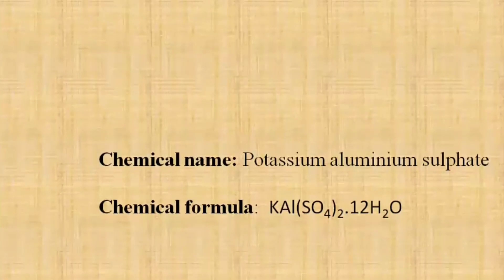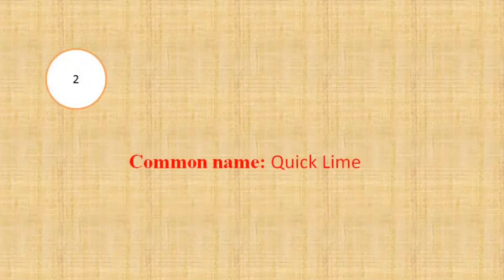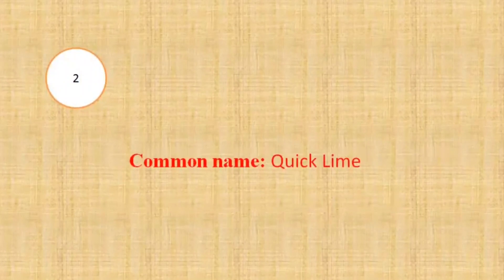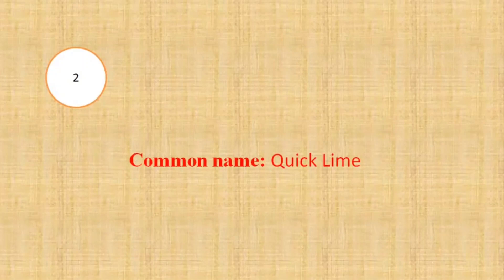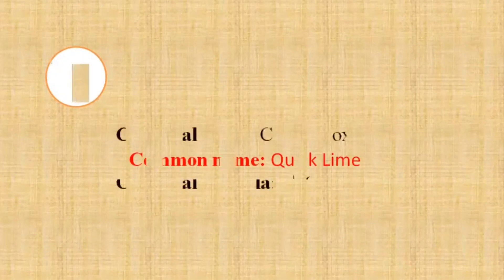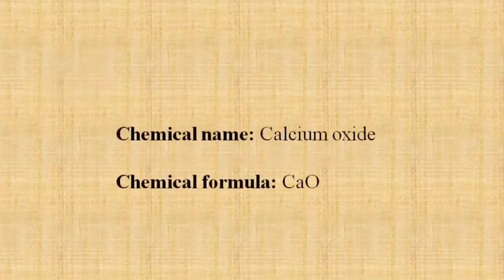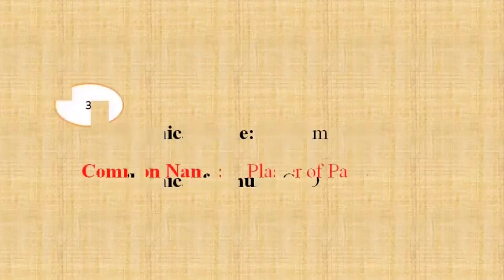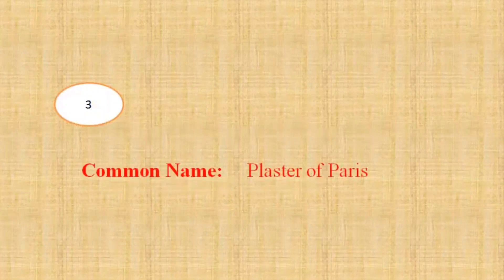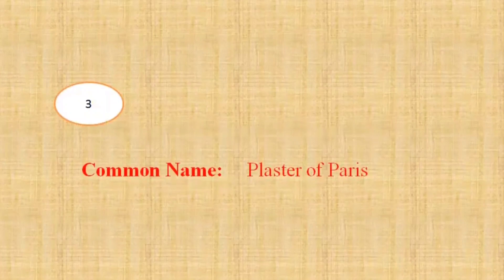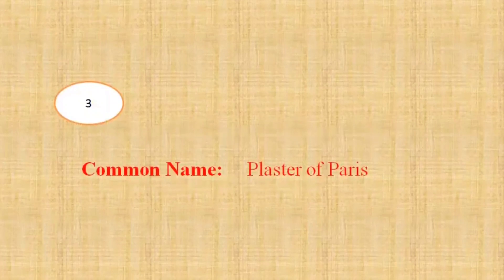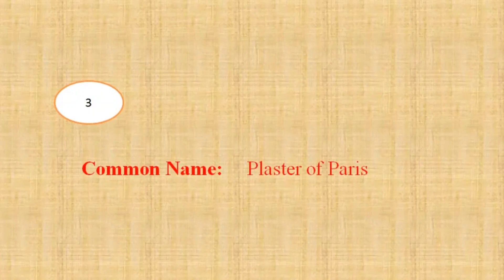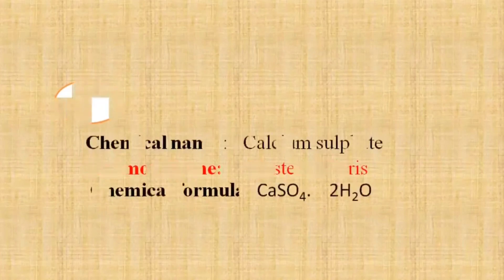Our next question is what is the chemical name of quick lime? The chemical name of quick lime is calcium oxide, that is CaO.